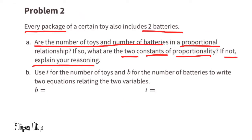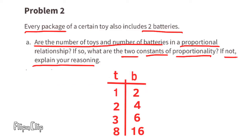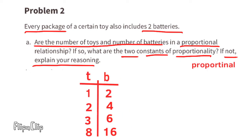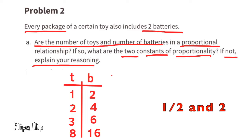Problem 2: every package of a certain toy also includes two batteries. Part a — are the number of toys and number of batteries in a proportional relationship? Let's make a table: on the left, the number of toys; on the right, the number of batteries. One toy, two batteries; two toys, four batteries, and so on. This pattern shows the relationship is proportional, and the constants of proportionality are one-half and two.